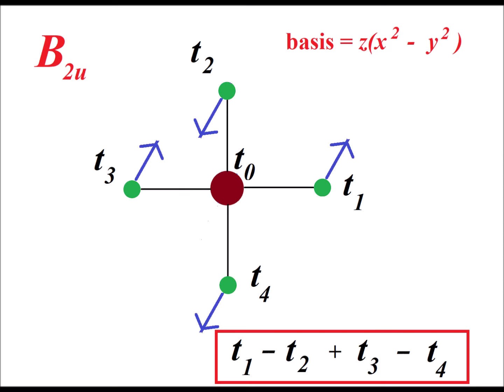Here we have a graphic representation of the B2U vibration. The nickel atom at t0 has a coefficient of 0, so it's not moving. The chlorines at t1 and t3 have a positive coefficient, so they're moving in the positive z direction, up, whereas the chlorines at t2 and t4 have a minus 1 coefficient.